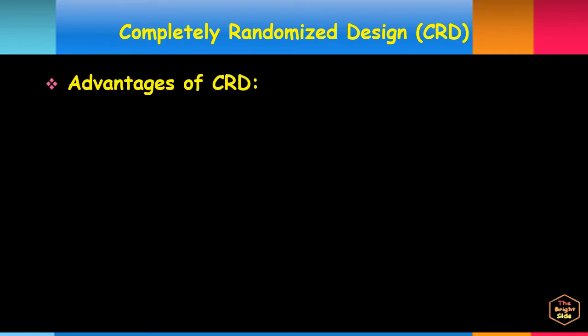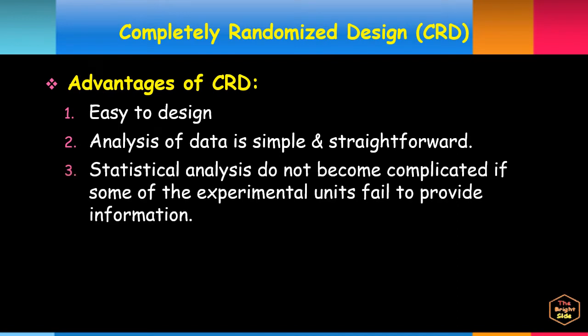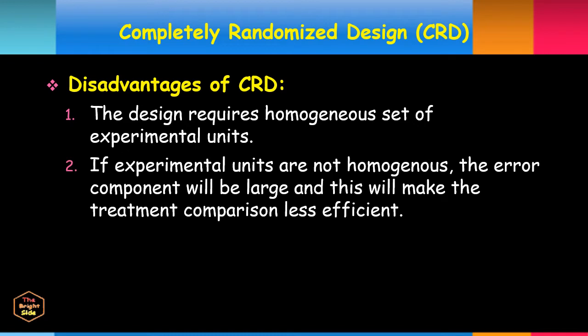CRD experiments are easy to design; analysis of data is simple and straightforward, and statistical analysis does not become complicated if some experimental units fail to provide information. However, the design requires a homogeneous set of experimental units. If experimental units are not homogeneous, the error component will be large, making treatment comparison less efficient.